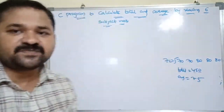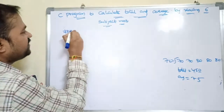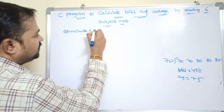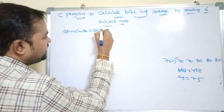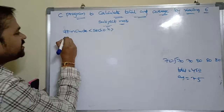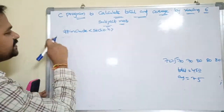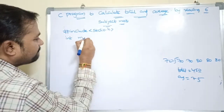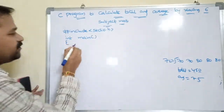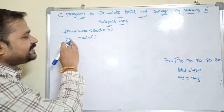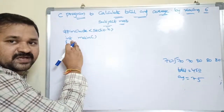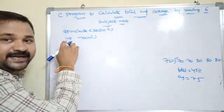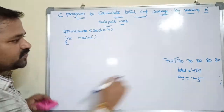So first we have to start from the header file declaration. In this program we have to use #include stdio.h. Why? Because here we are using printf and scanf functions, which are available in stdio.h. Next statement: int main. If the program is successfully executed then it returns a value called 0, which is an integer value.